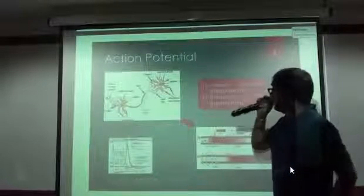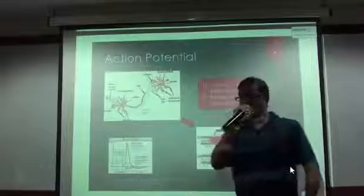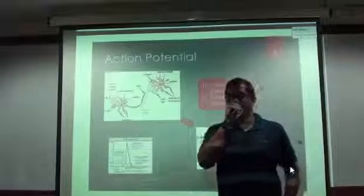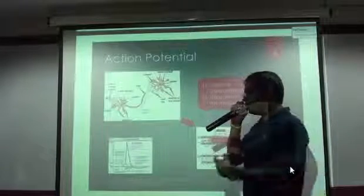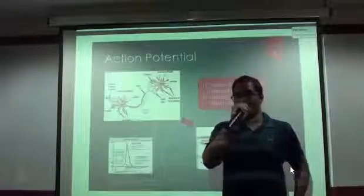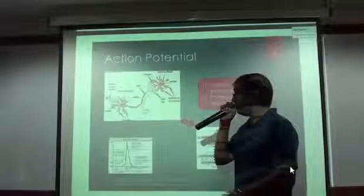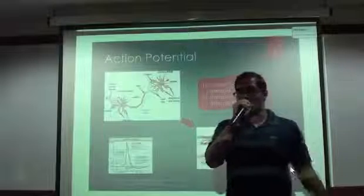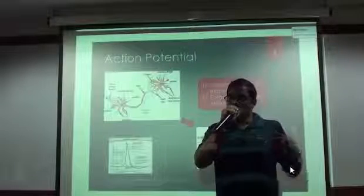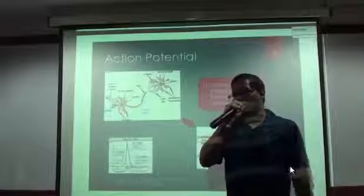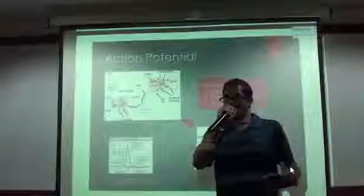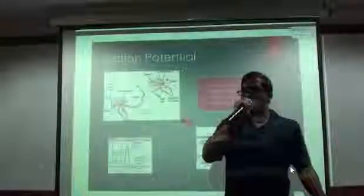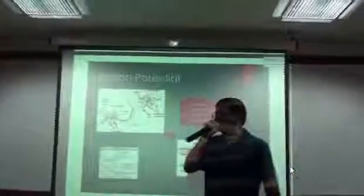The action potential is a very important mechanism in the communication of neurons. We have seen that neurons communicate with each other — they do so through the action potential. Action potential is an all-or-none potential, meaning either the neuron will fire or it won't fire. The action potential is a mechanism through which neurons can propagate signals over long distances.